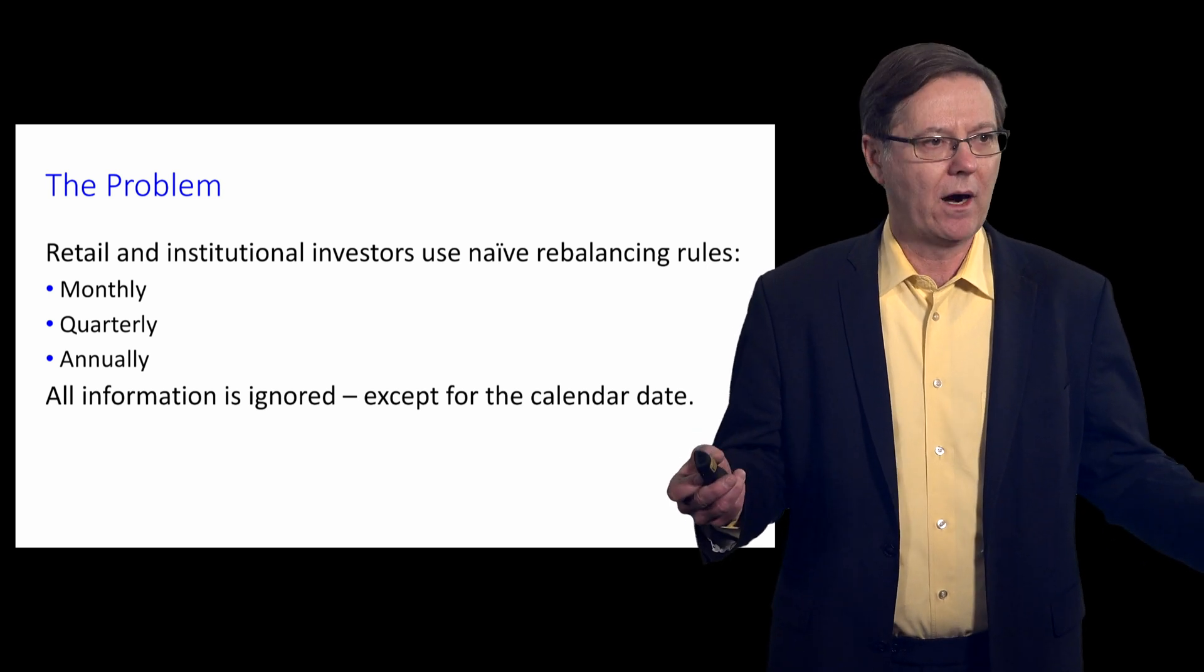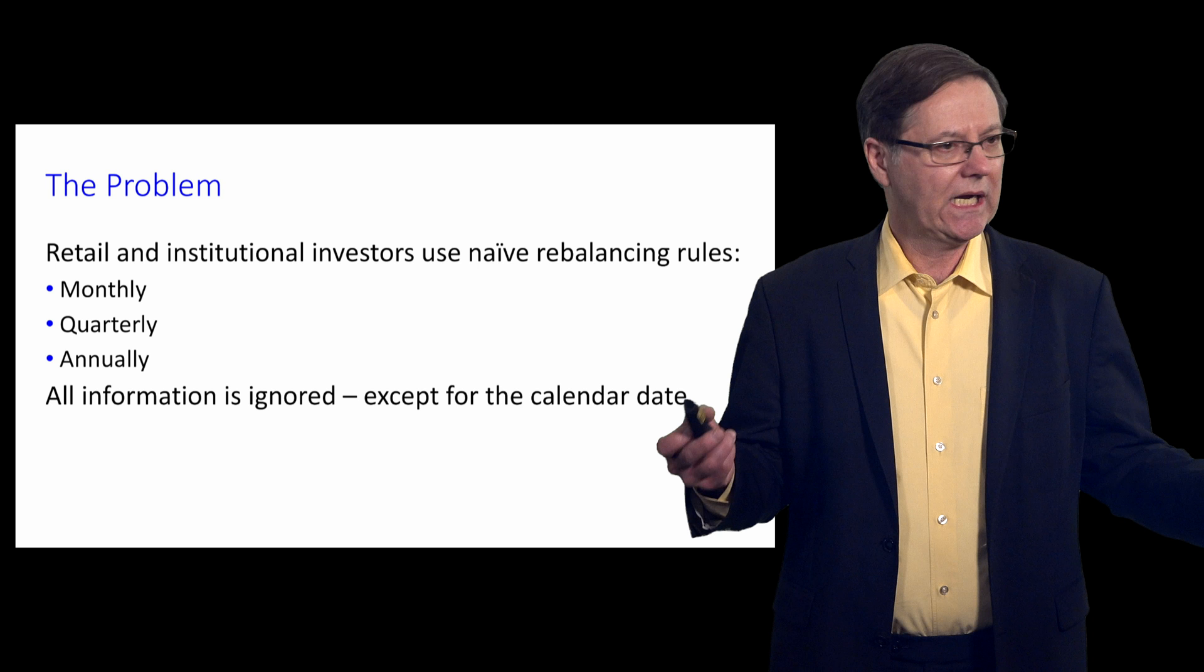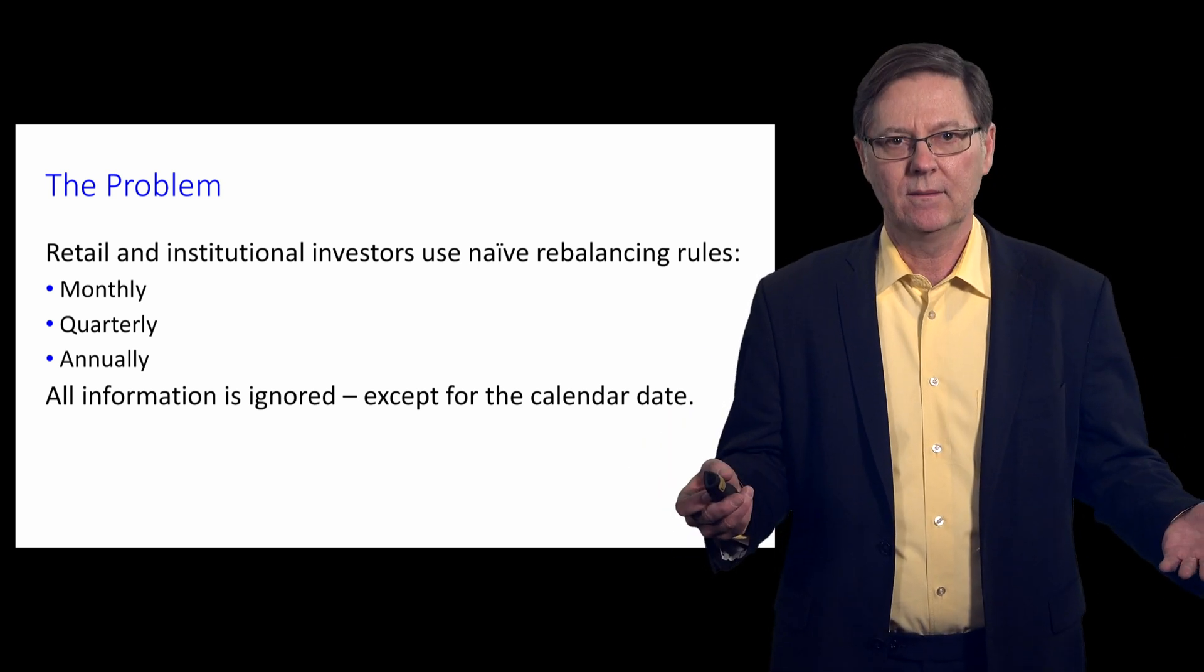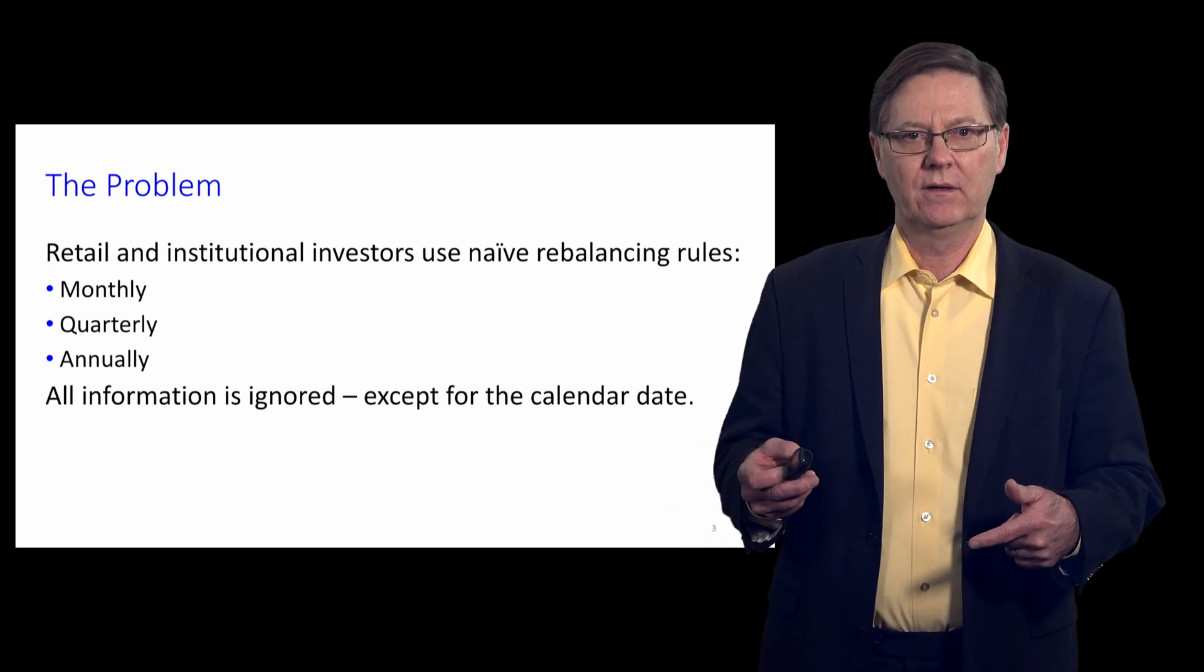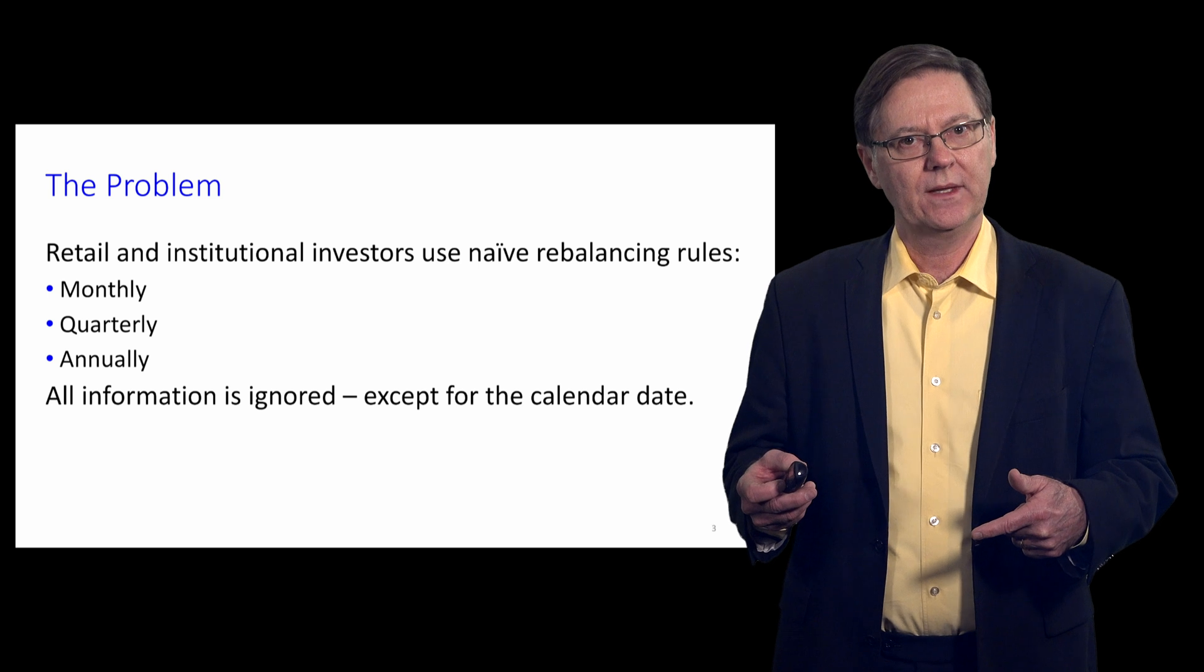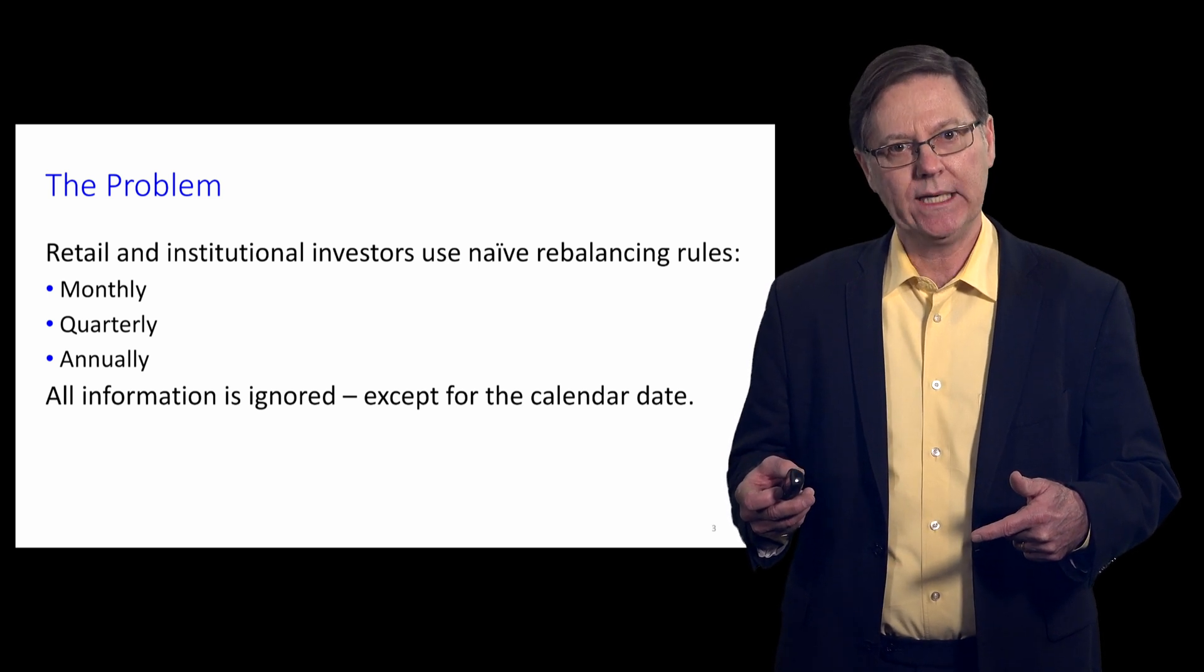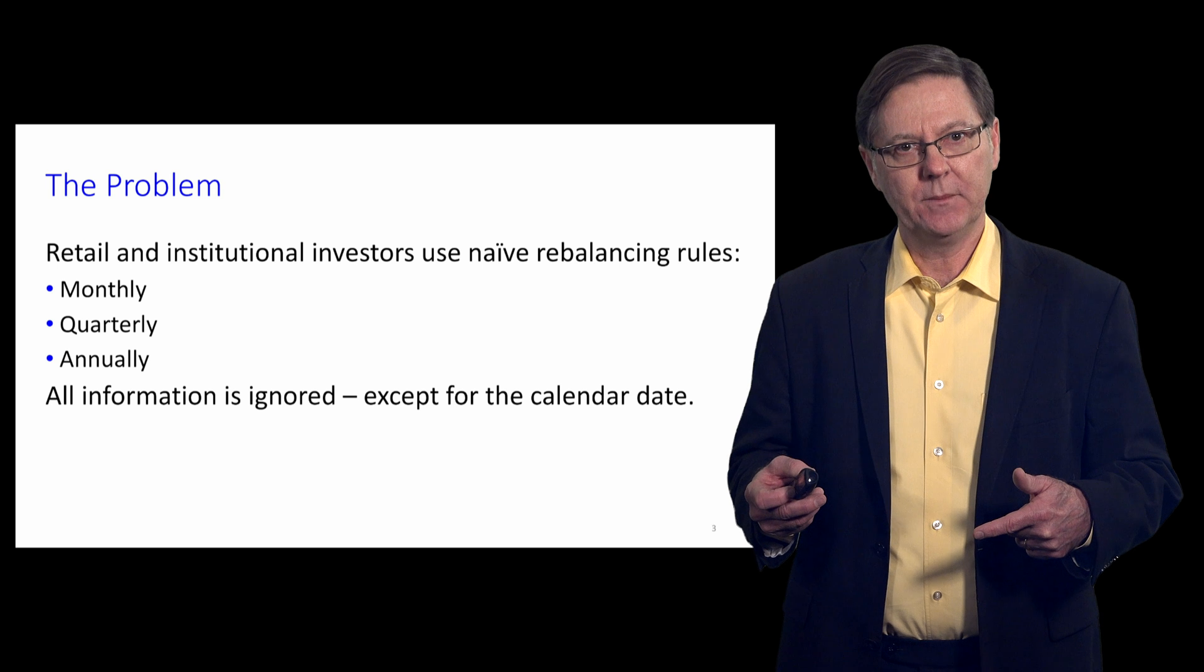All of the information that might be relevant for asset allocation—the climate of the market, the volatility—all of this is ignored. The only thing relevant for this active rule is the calendar date. And surely that is not optimal.